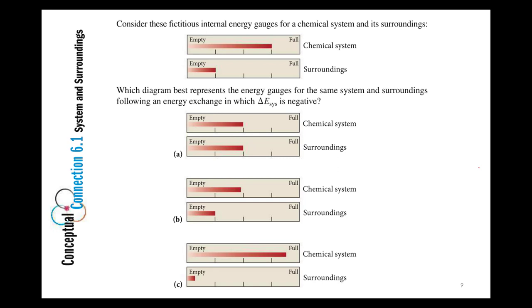All right, let's go sort of in reverse. Okay, why doesn't B work? Okay, so we lost energy. Chemical system lost energy. But the surroundings didn't gain it. Okay, so if energy's going to be conserved, if the system loses energy, the surroundings has to pick it up for energy to be conserved. First law of thermodynamics. Okay.